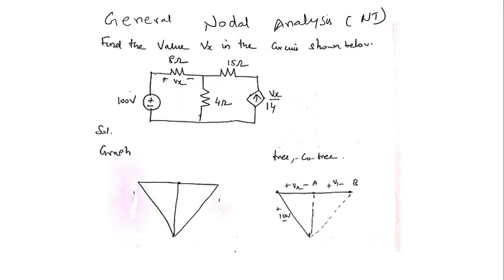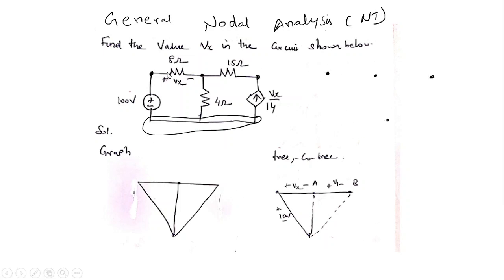The first step is to draw a graph from the circuit. From the graph I need to draw a tree, and then by applying nodal analysis and KCL at the nodes I need to find out the unknown voltages. I am going to identify nodes: node one, two, three, and four — there are totally four nodes. The first thing is to draw a graph, so I am going to replace the 8-ohm resistor.